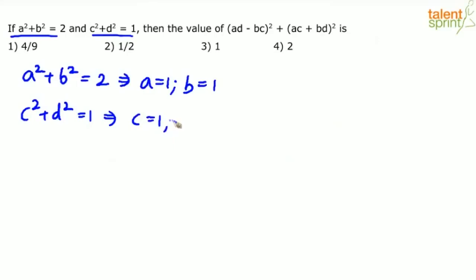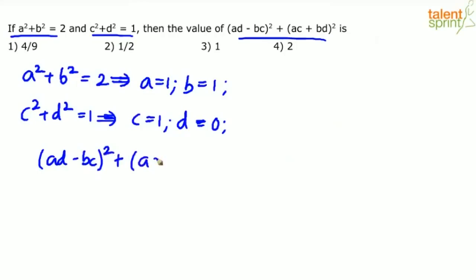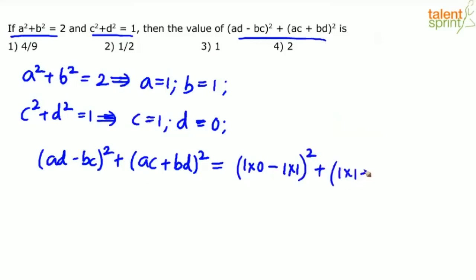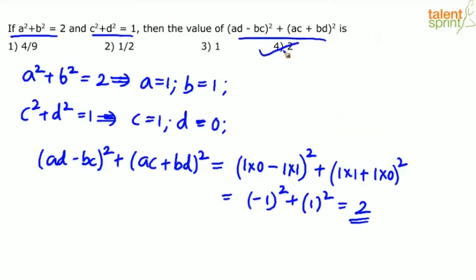For c squared plus d squared equals 1, take c equals 1 and d equals 0, since 1 plus 0 equals 1. You could also take c equals 0 and d equals 1 — as long as the equation is satisfied. Now substitute: (ad minus bc) squared plus (ac plus bd) squared becomes (1·0 minus 1·1) squared plus (1·1 plus 1·0) squared, which is (−1) squared plus (1) squared equals 1 plus 1 equals 2.